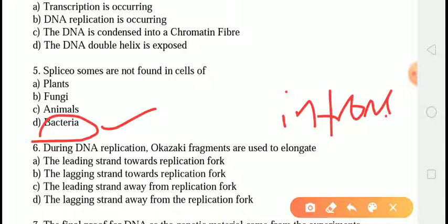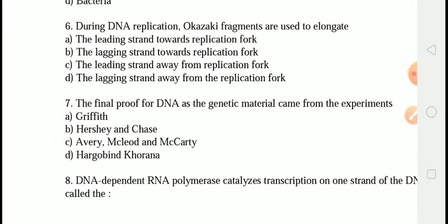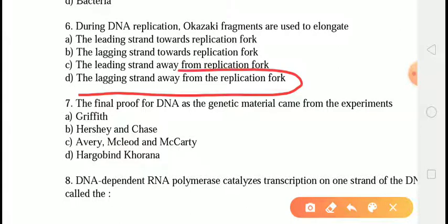The next question is: during DNA replication, the Okazaki fragments are used to elongate which strand? The correct answer is answer D — the lagging strand, away from the replication fork. The lagging strand is replicated in short segments called Okazaki fragments, and its growth is discontinuous. The direction of growth of the lagging strand is 5' to 3', as is the case within each Okazaki fragment.